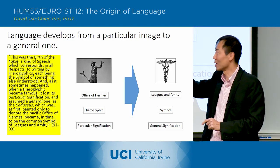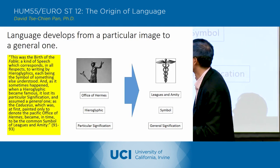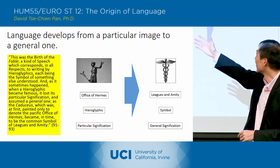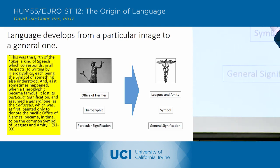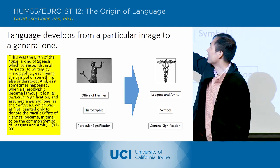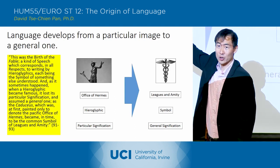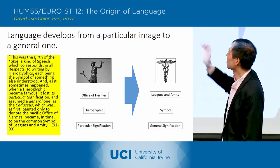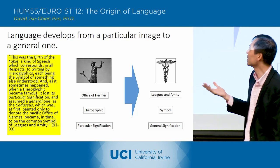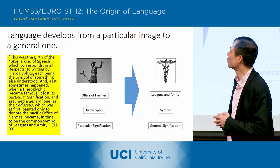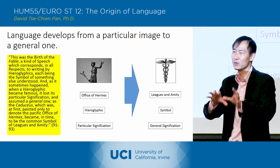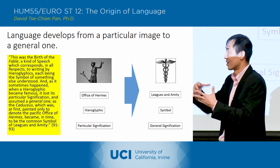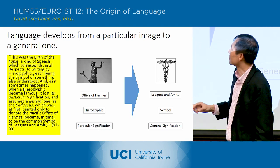He gives this example of the caduceus. This is a caduceus, which is a symbol that was carried by the god Hermes in Greek mythology. He writes: 'This was the birth of the fable, a kind of speech which corresponds in all respects to writing by hieroglyphics.' So he's giving us a comparison between the fable and hieroglyphics, each being the symbol of something else understood.